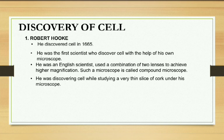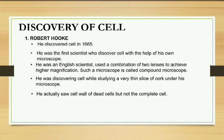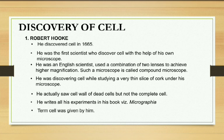He discovered the cell while studying a very thin slice of cork — also called bark or phellum — on the stem of a plant, especially a mango tree. The outer part, called cork, is a non-living part of the plant. When he observed it, he saw only a cell wall, which was a dead cell. He then wrote a book called Micrographia, recording all his experiments about the cell, and the term 'cell' was given by him.